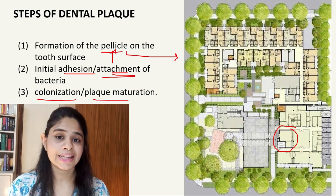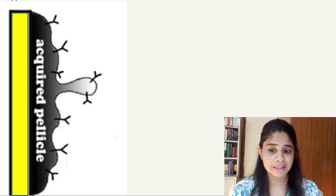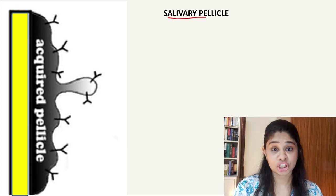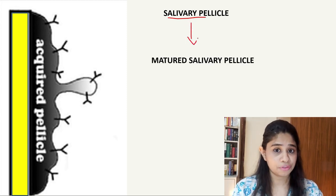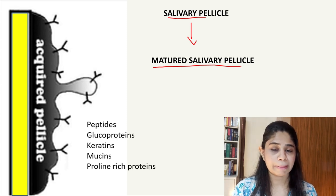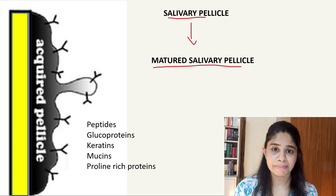Now let's get into the details. The first step is the formation of the pellicle. An acquired pellicle, also called the salivary pellicle, is formed within a few minutes of brushing our teeth. This salivary pellicle then undergoes maturation within a few hours to form the mature salivary pellicle. The fundamental agents present in the salivary pellicle are peptides, glycoproteins, keratins, mucins, and proline-rich proteins, which basically come from saliva, but certain bacterial products also contribute to acquired pellicle formation.